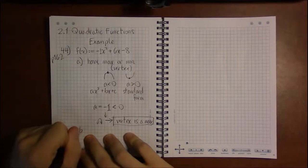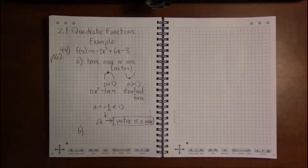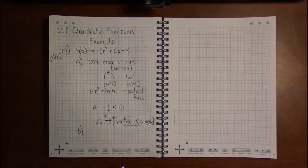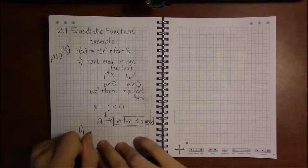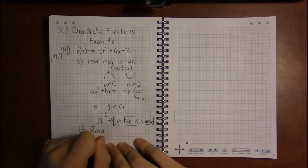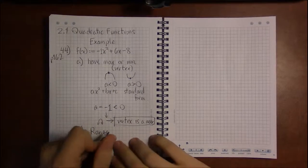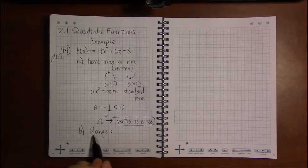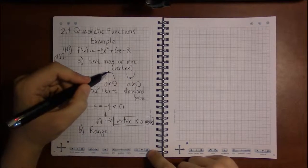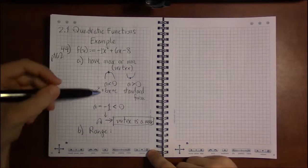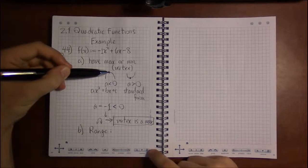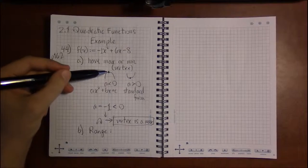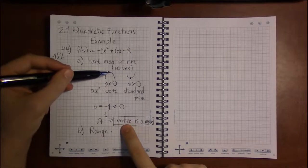Part b asks us what the range of this quadratic is. The domain of every quadratic, of every polynomial in fact, as we'll see in a few sections, is always everything, minus infinity to infinity. But the range, this has a max, so it's going to be everything from minus infinity up to the highest y value.